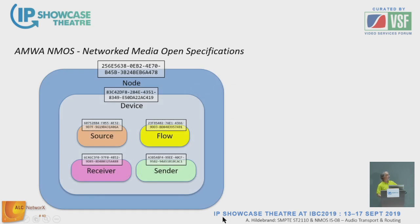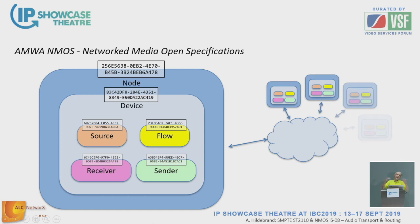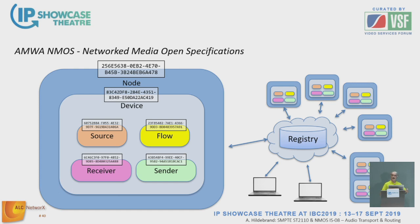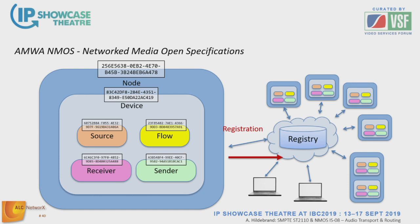We have our device with all its entities and objects inside, and of course a network with a bunch of devices connected to it, along with control systems. A device utilizing IS-04 announces its entities — its objects — into a registry. The registry is not a piece of hardware; it's a service accessible in the network. It can run on a switch or a separate server machine. All devices tell the registry what they have available and what their capabilities are. Each object has a unique ID and is stored in the registry. A broadcast control system can then query the registry to find what's available and check the status of flows and receiving points.